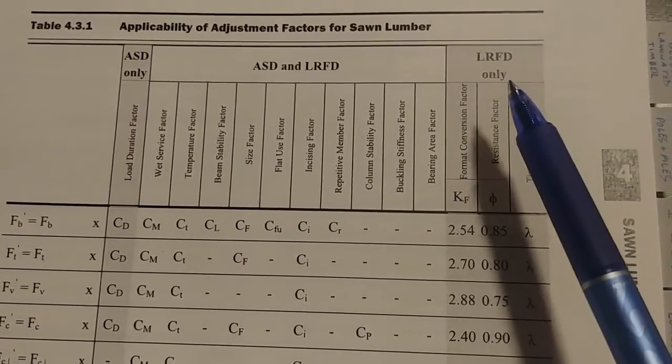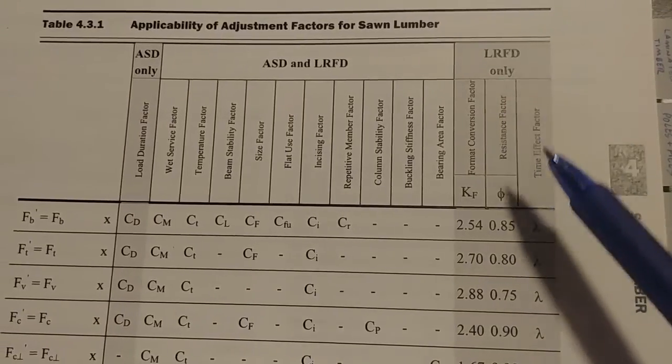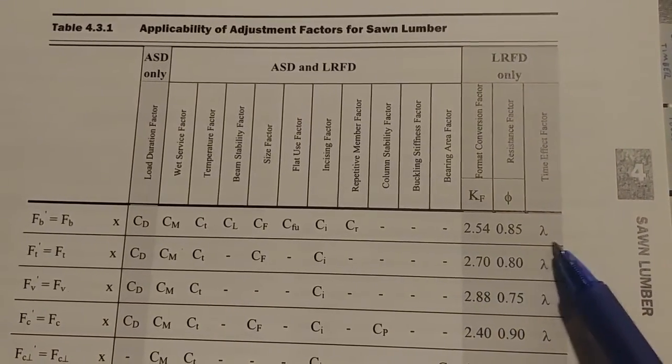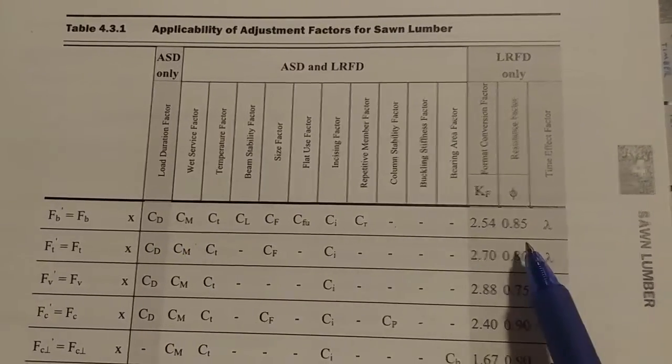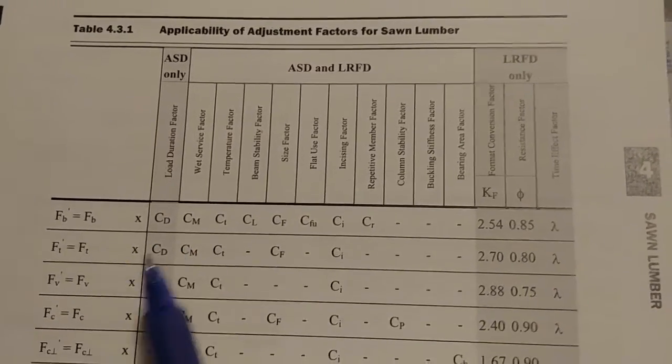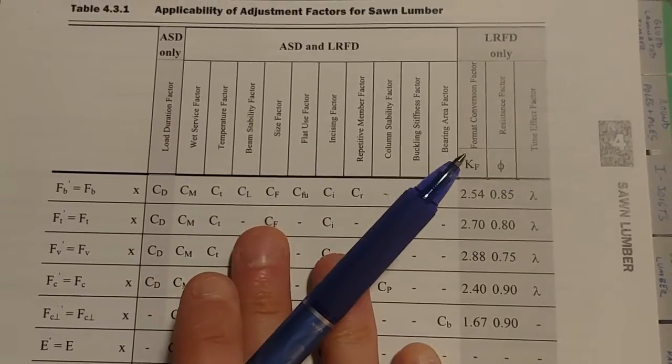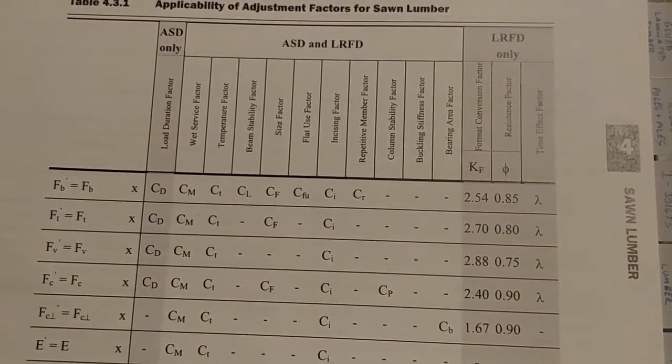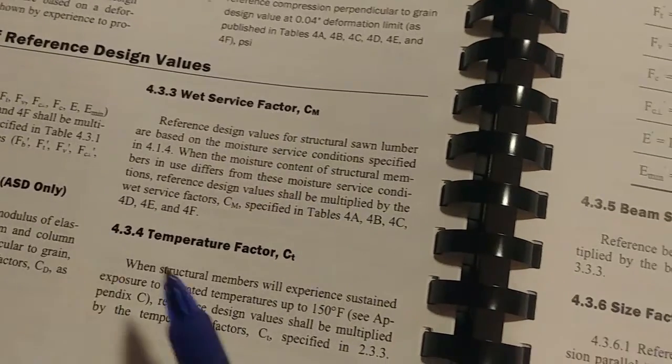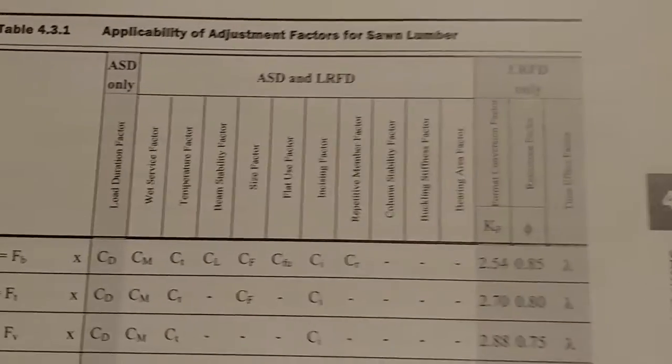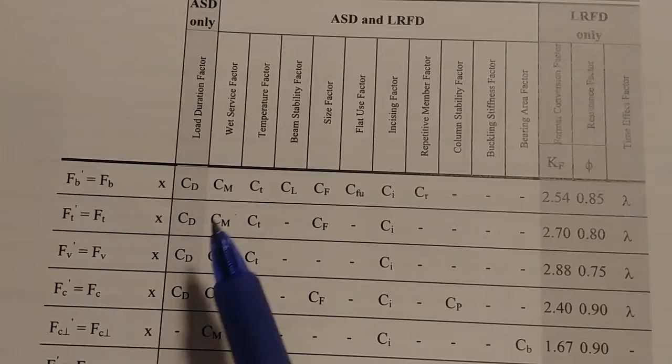If you are calculating using LRFD, you have to use these three values instead of this CD value. And there's rules for all of these within this book. I'm not going to go over each one, but it's highlighted throughout. Like if you look below here, CL, CF, CFU, I mean, they're all over the place. It tells you what to do, where it comes from. But CD will be our first and that's 0.9. And we get that. That's the load duration factor.